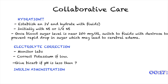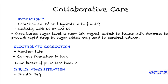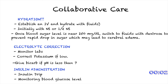Lastly, it's insulin administration. The doctor would probably order an insulin drip for the patient. As nurses, the very important thing you have to do when a patient is on an insulin drip is to monitor blood sugar level. To summarize the care for a patient with DKA: hydration, electrolyte correction, and insulin administration.